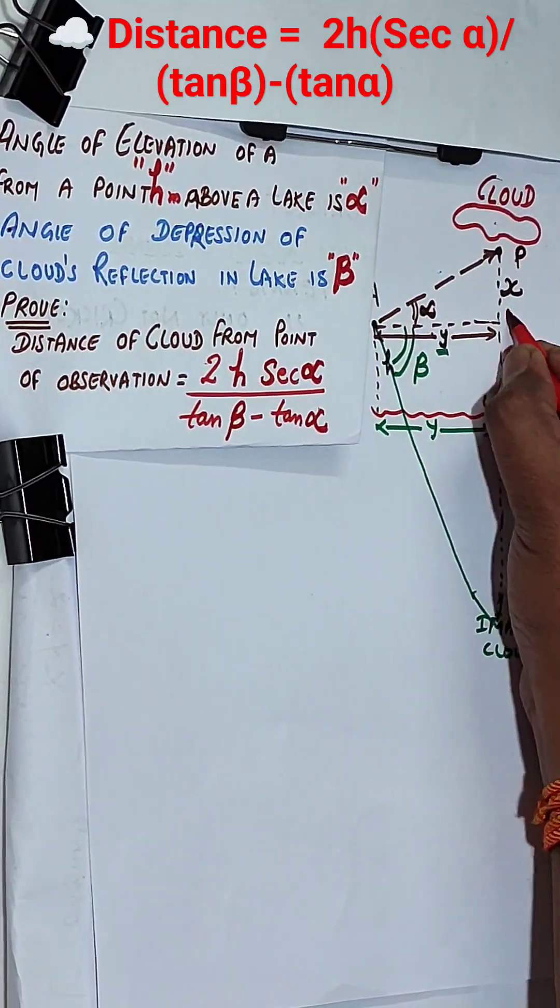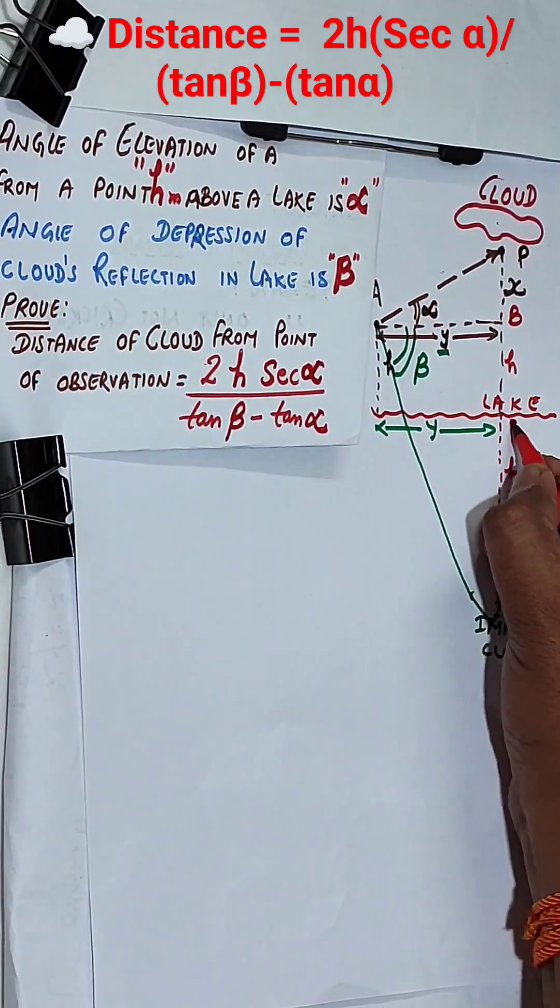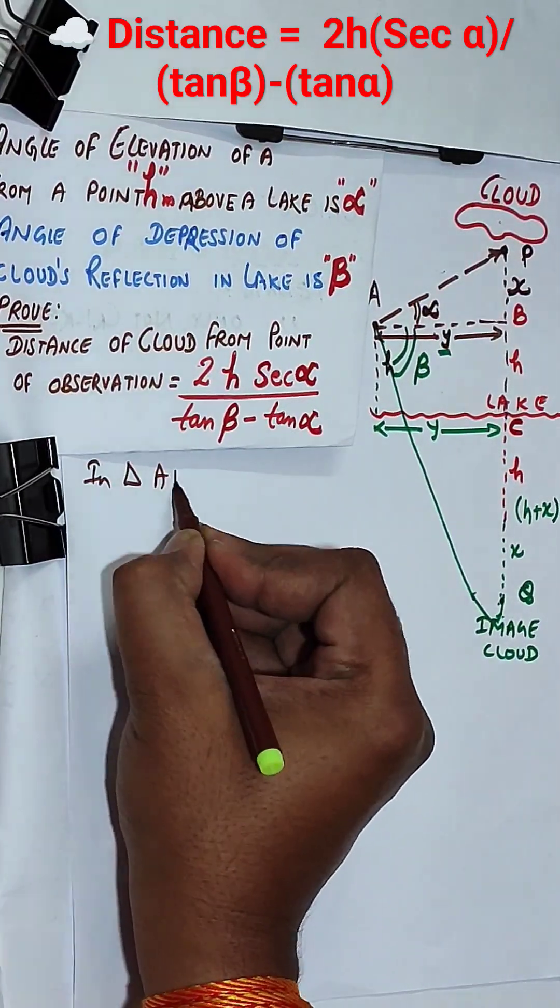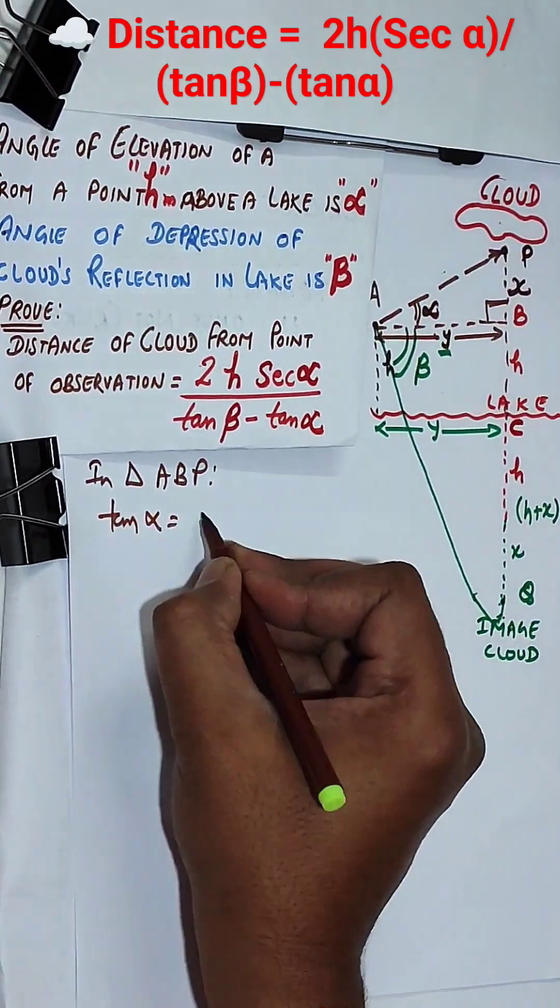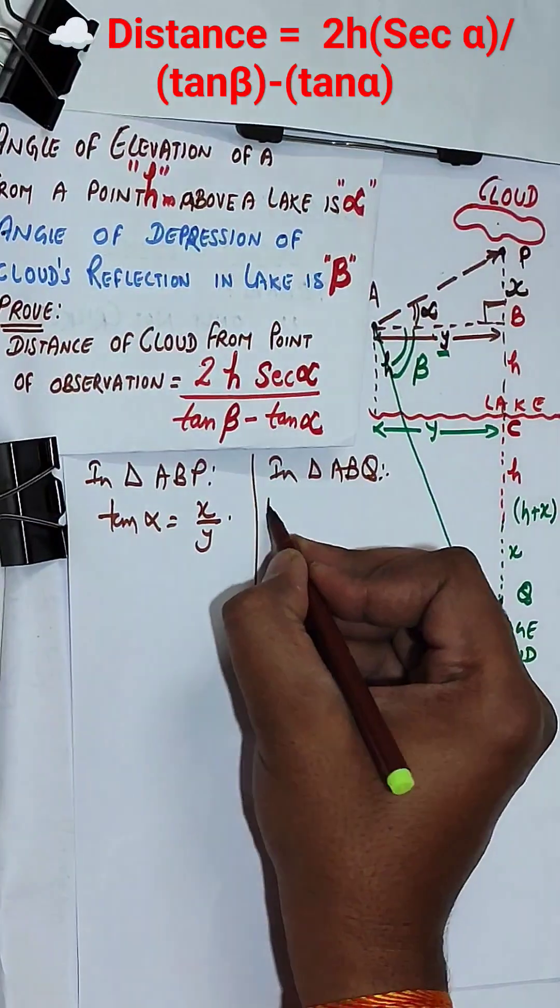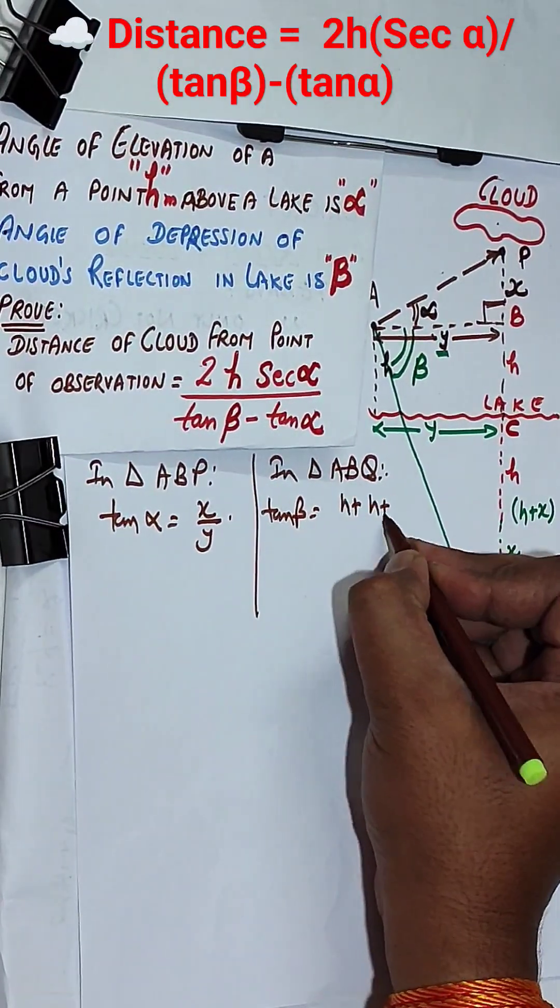Tan alpha equals x by y, if y is considered as the width of that lake. Now tan alpha equals x by y, and in triangle ABQ, tan beta equals h plus h plus x by y.